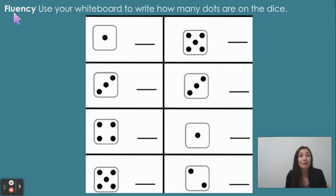Here is our fluency. Use your whiteboard to write how many dots are on the dice. Let's start with this one here. So grab your whiteboards and your markers and let's get busy with fluency.